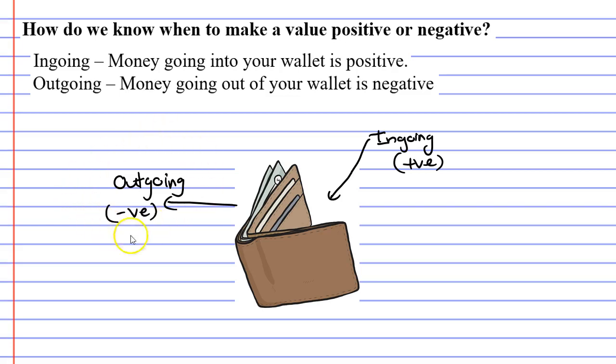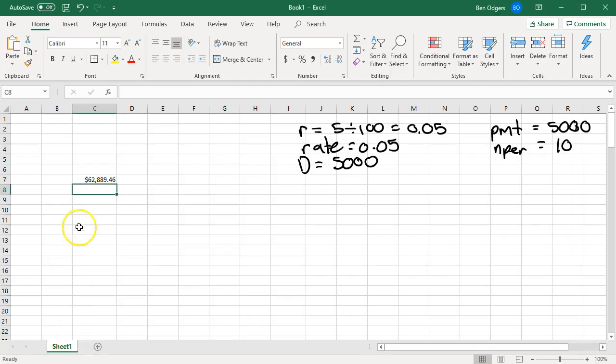This is because when money goes out of your wallet you've got less money to spend. Now if you think of a repayment, this is an example of an outgoing. Because when you make a repayment you've got to take money out of your wallet and put it into your investment account or your loan account. That is why in Microsoft Excel we had to make our repayment of $5,000 a negative.